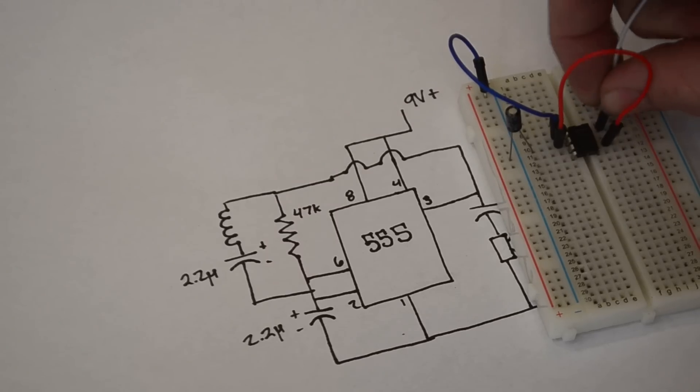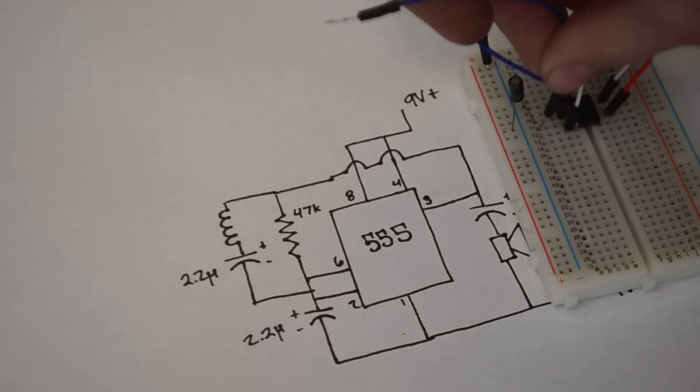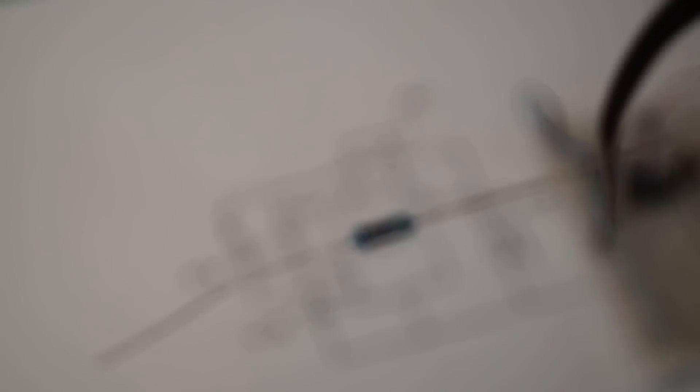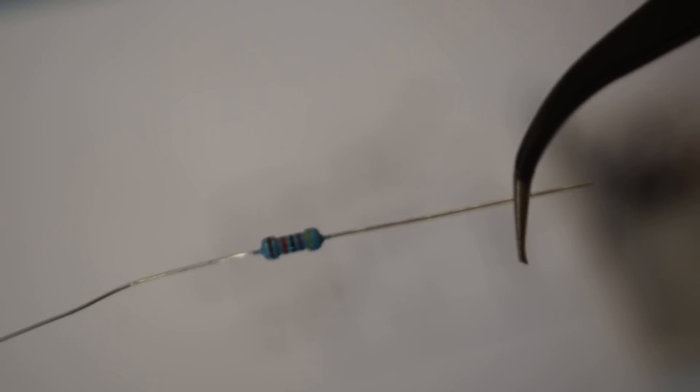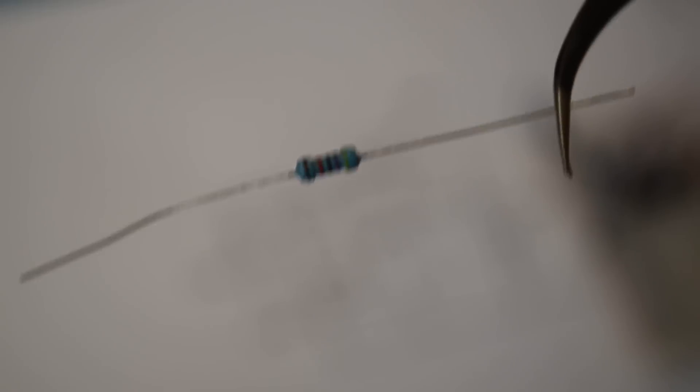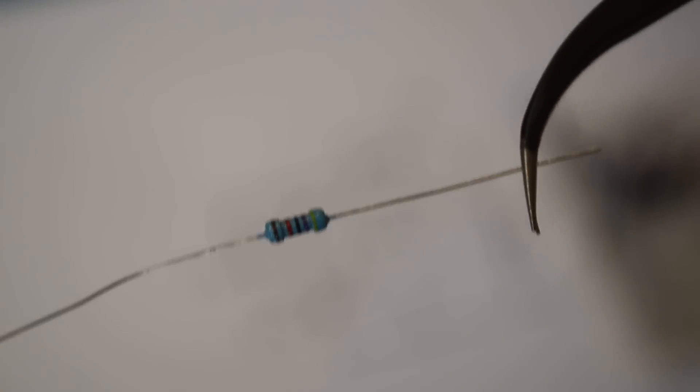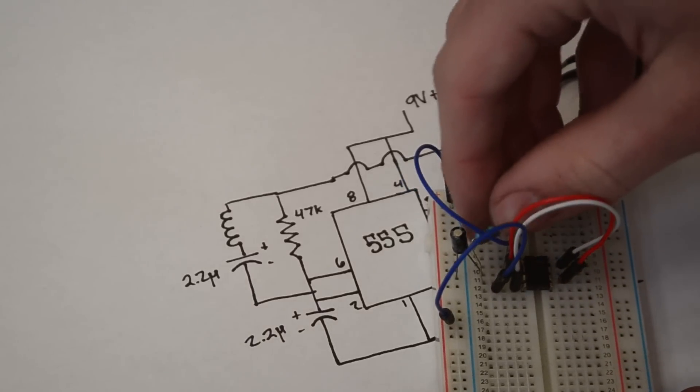Now I'm going to have this wire going from pin 8 to pin 4, and then another wire going from pin 4 to the positive rail. Now I'm going to take this 47,000 ohm resistor. If you need to find out which resistor is a 47,000 ohm one, you can use the color code that you can see printed on the resistor. But anyways I'm going to insert that between pin 2 and pin 3.